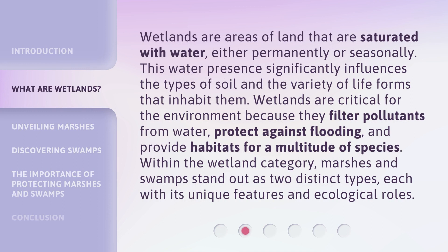Wetlands are areas of land that are saturated with water, either permanently or seasonally. This water presence significantly influences the types of soil and the variety of life forms that inhabit them. Wetlands are critical for the environment because they filter pollutants from water, protect against flooding, and provide habitats for a multitude of species. Within the wetland category, marshes and swamps stand out as two distinct types, each with its unique features and ecological roles.